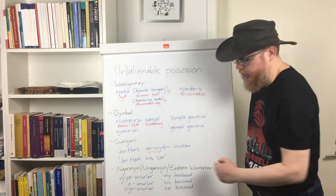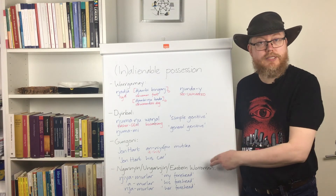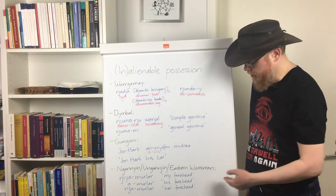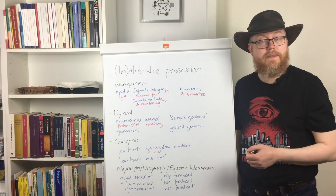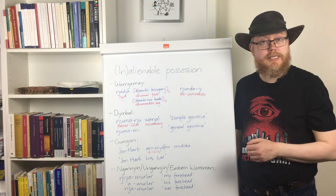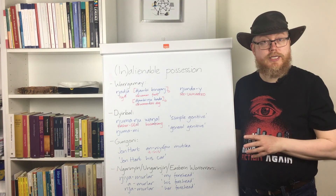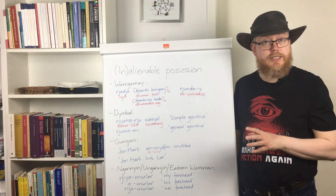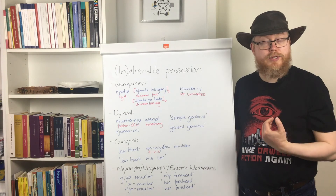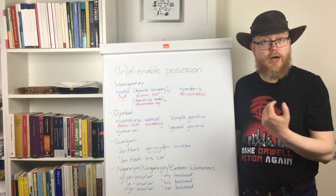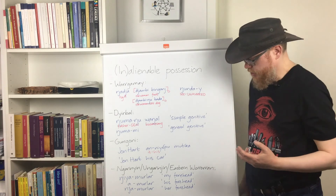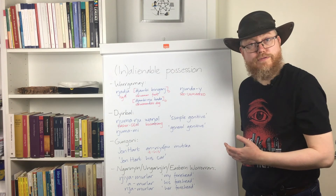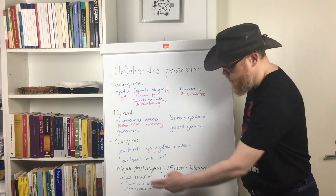Last but not least, we have the Ngarinyin language, which is known by different names. It is a language of northernmost Western Australia and belongs to the Wororan language family. They have lots of prefixes. It so happens that the languages of the world that make most use of prefixes are the languages of the Top End in Australia and the Bantu languages in Africa, spoken south of the Sahara. Here you can see the word for 'forehead,' and to indicate whose forehead you are talking about, you use prefixes.